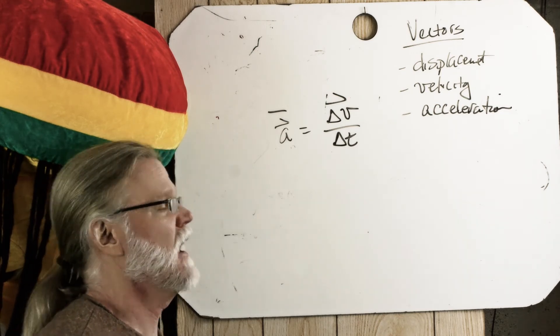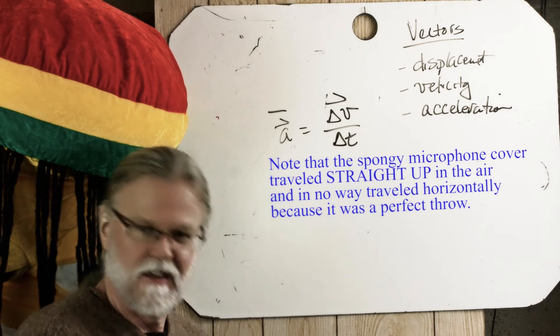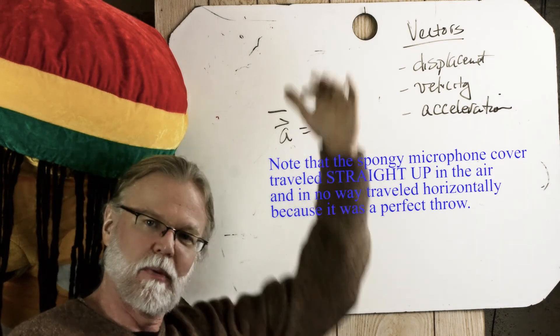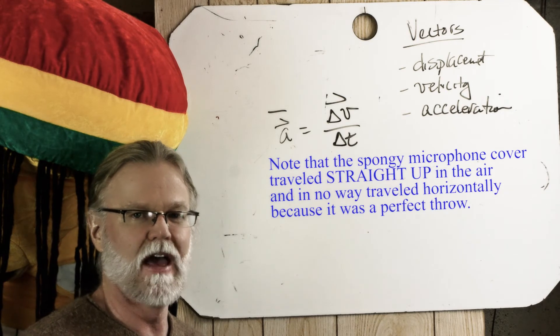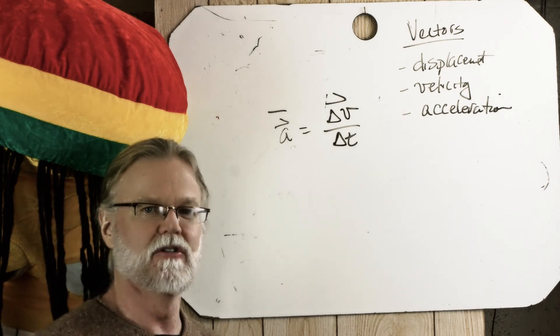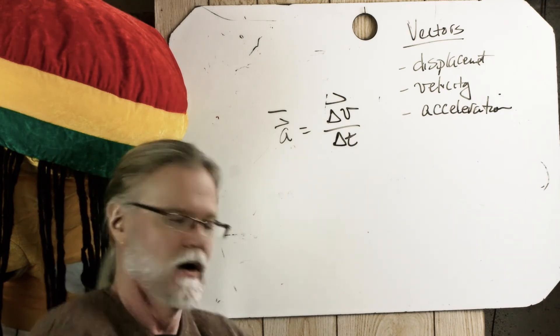So you're going to throw it up in the air and after it leaves my hand, but before it gets to the top, I want to know the direction of the acceleration and I want you to do that with a vector diagram. Why don't you do that right now?